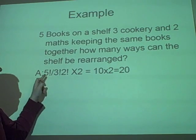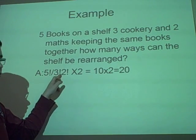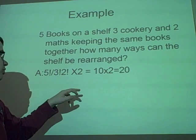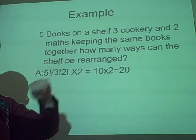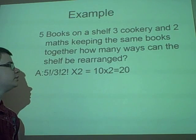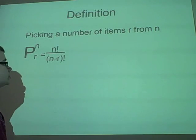So, five factorial over three factorial times two factorial times two. Now, this happens to be ten, so ten times two is twenty. So, you have twenty different ways that the shelf can be rearranged.